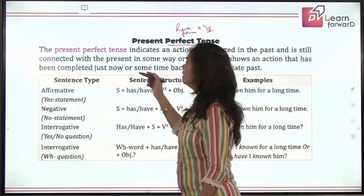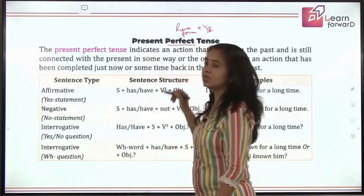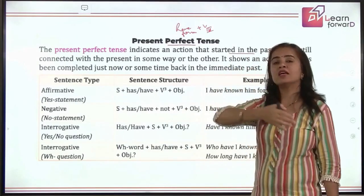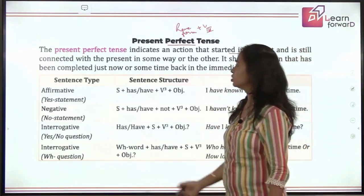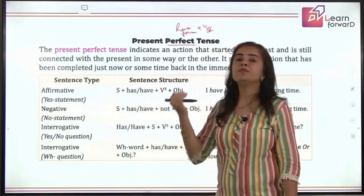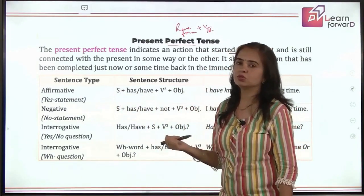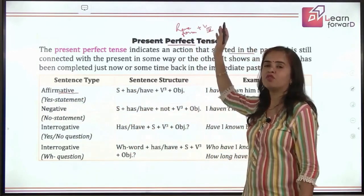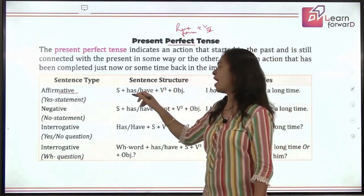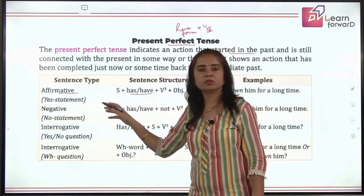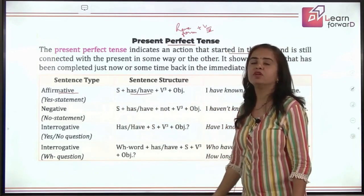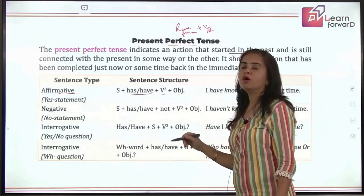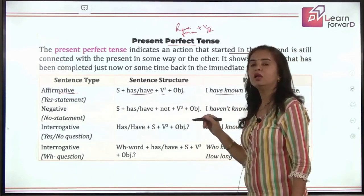What's the structure? Present perfect tense indicates an action that is just completed — that started in the past but just now finished — and importantly, such an action has an impact on the present also. For affirmative sentences, you use 'has' or 'have' depending on the subject. If your subject is singular, we use 'has'; with all other subjects, we use 'have,' and then the third form of verb. For example: I have known him for a long time.